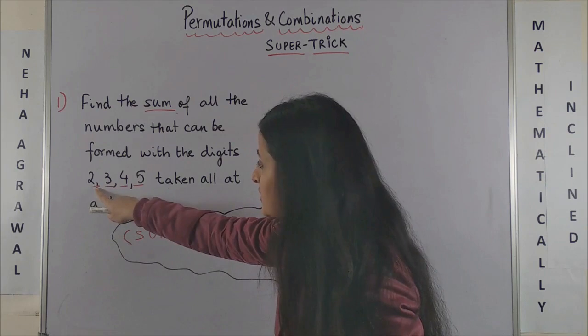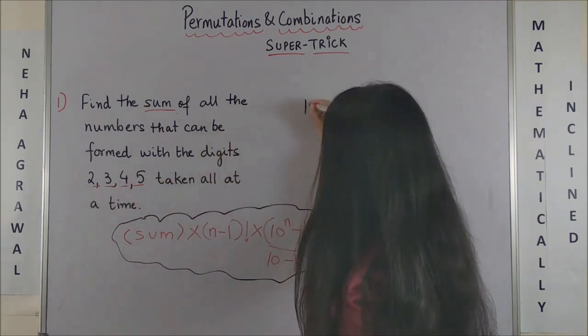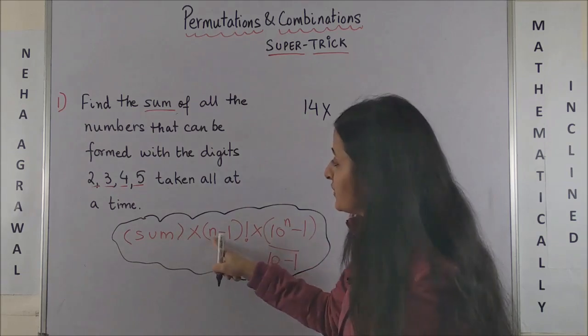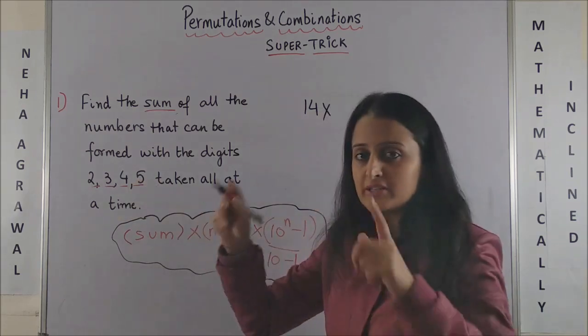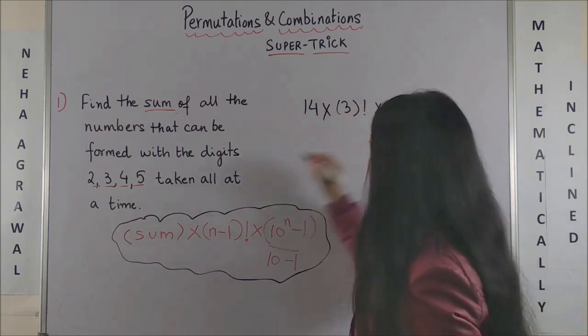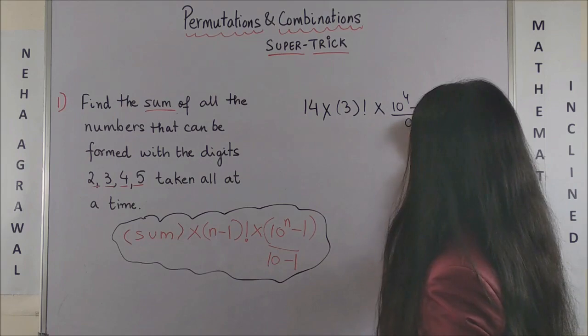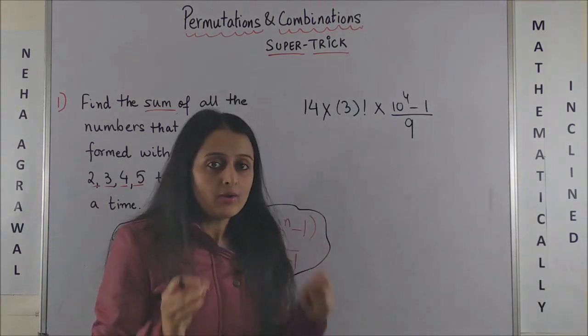To apply the same in the question, sum of these digits: 2 plus 3 is 5, plus 4 is 9, plus 5 is 14. Into the number of digits which are n, so there are 4, that means 4 minus 1 is 3 factorial, into 10 raised to power 4 minus 1, upon 10 minus 1, that gives us 9.